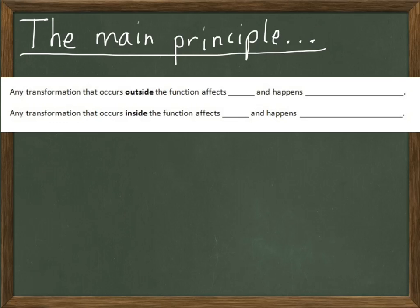Let's look at the main principle. We're going to do some investigations in class that look at this. Depending on when you're watching the video, we will have already done the investigations, or you're watching and getting ahead of the game. Here's the main gist: any transformation that occurs outside the function is going to affect y, and any transformation that occurs inside the function is going to affect x. When we use the function notation f of x, remember that represents y — the function is going to be plotted on the y-axis, and x gets plugged in to the function.